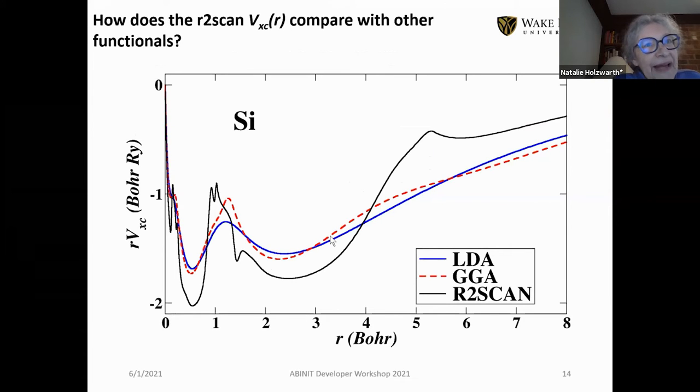You might ask how this compares between LDA and GGA. This is the exchange correlation function multiplied by r for LDA, GGA, and R2SCAN. You see that R2SCAN has a lot more structure near regions where the density and kinetic energy density are very large. But in the region where we focus our attention for pseudopotentials, everything is more smooth. So it looked like we could go ahead and try the pseudization.